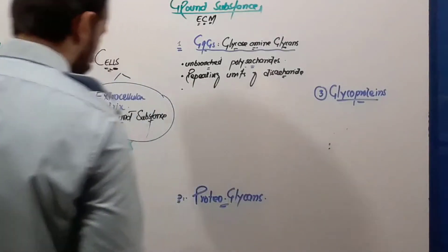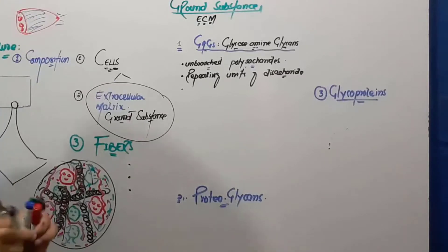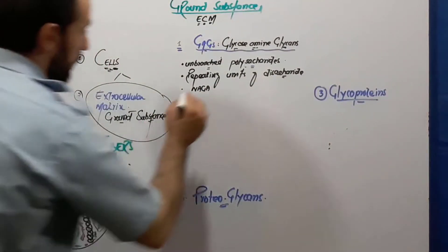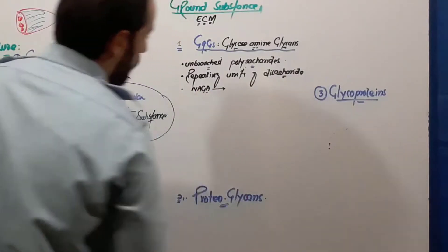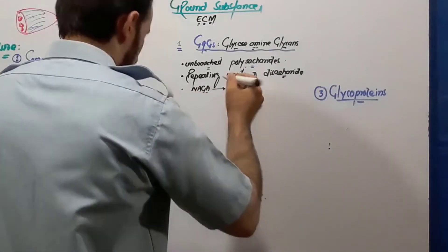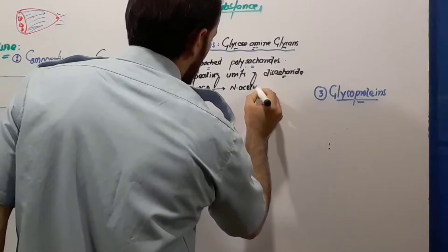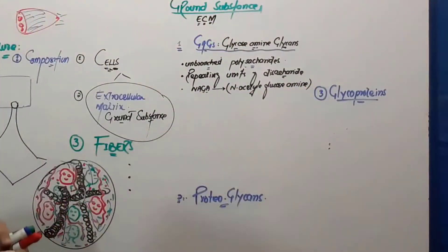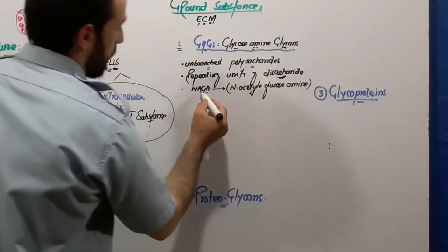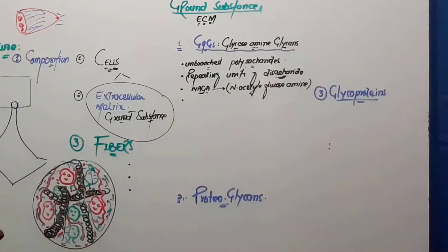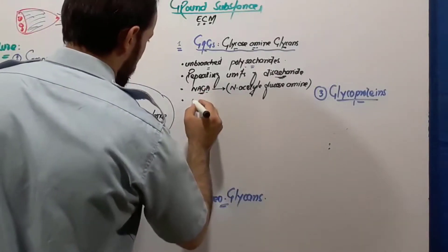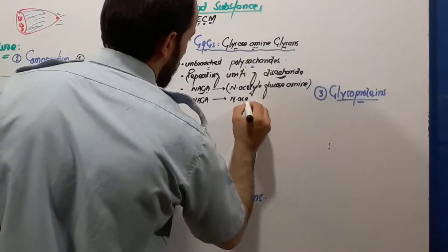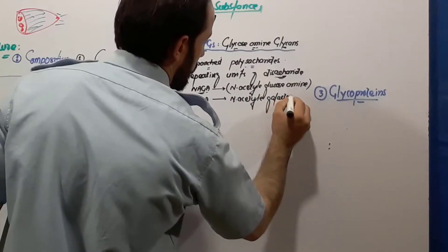They are made up of repeating units of disaccharides, and those disaccharides which are present are NAGA. NAGA stands for N-acetylgalactosamine and N-acetylglucosamine. In the ground substance, the GAGs which are the repeating disaccharides — the first one is N-acetylglucosamine and the second one is N-acetylgalactosamine.